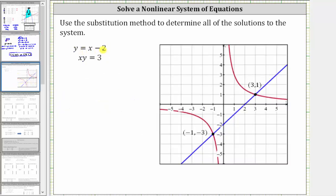So y equals x minus two is graphed here in blue. To graph x times y equals three, we can make a table of values or solve for y by dividing both sides by x, which gives us y equals three divided by x, which gives us the graph of the red rational function.